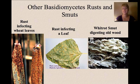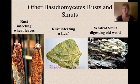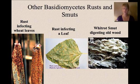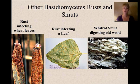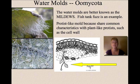Other basidiomycetes are rusts and smuts, which generally infect plants. Rusts infect wheat leaves and cause a lot of crop damage. Fungus is a decomposer and is extremely important in our environment for breaking down dead plant and animal matter — but when it starts to break down our crops or gardens before we're ready, we're not too happy with it.